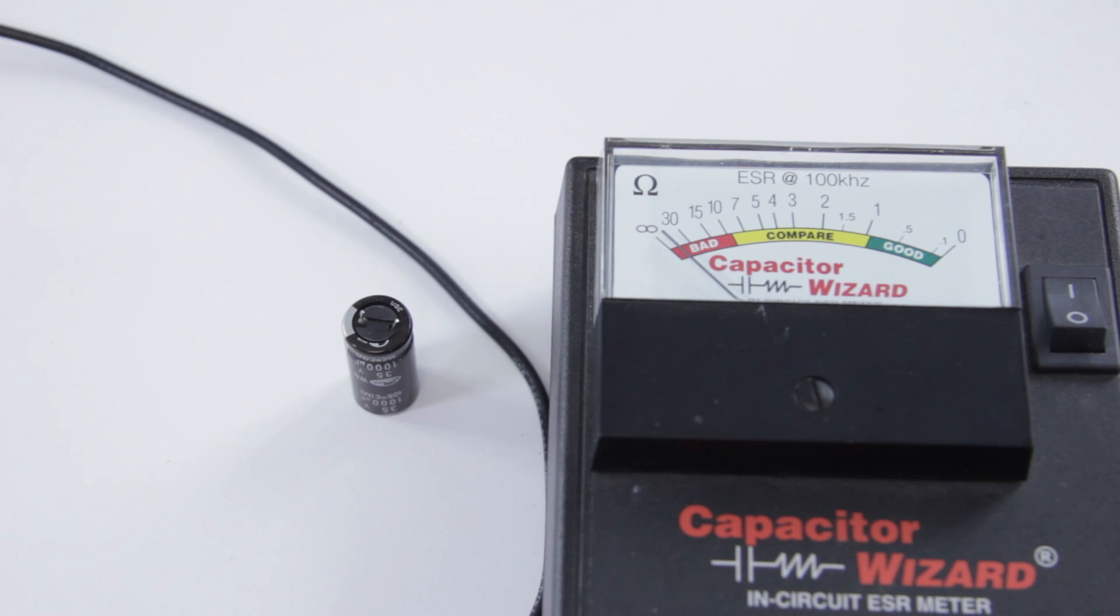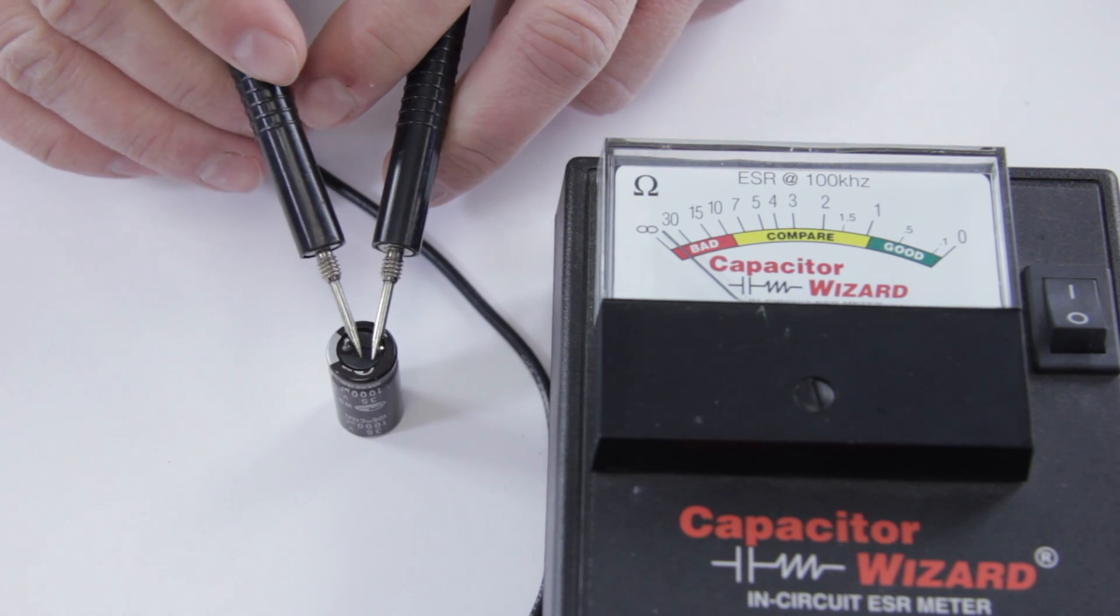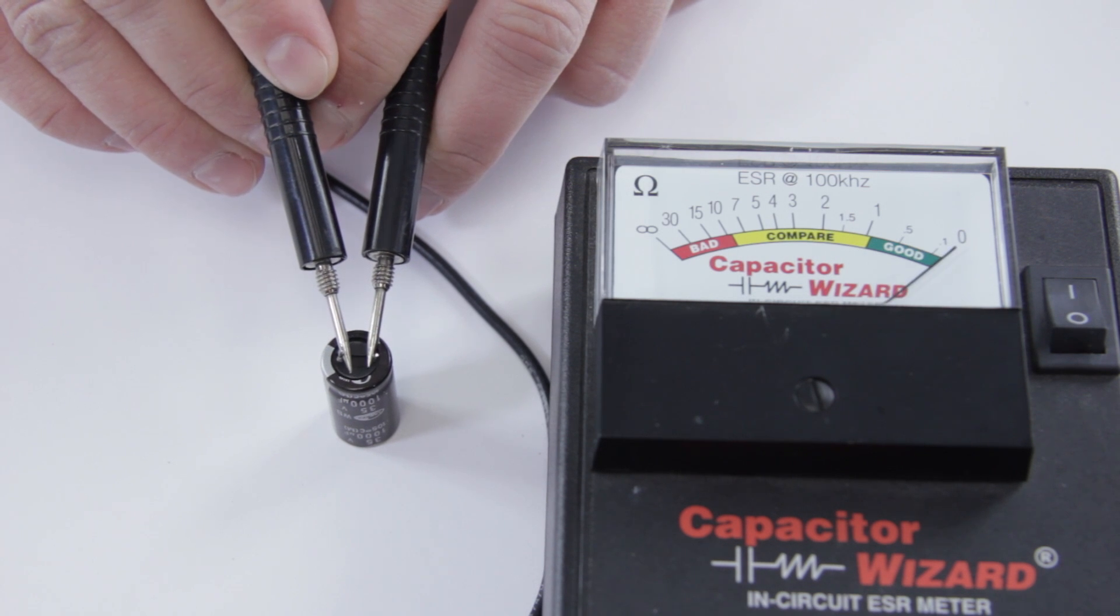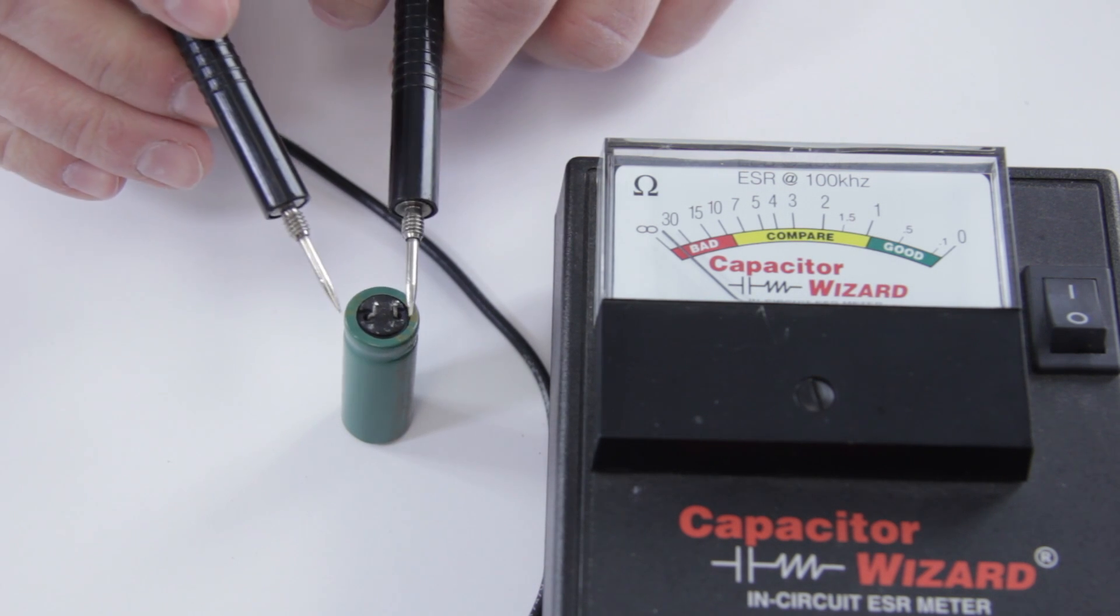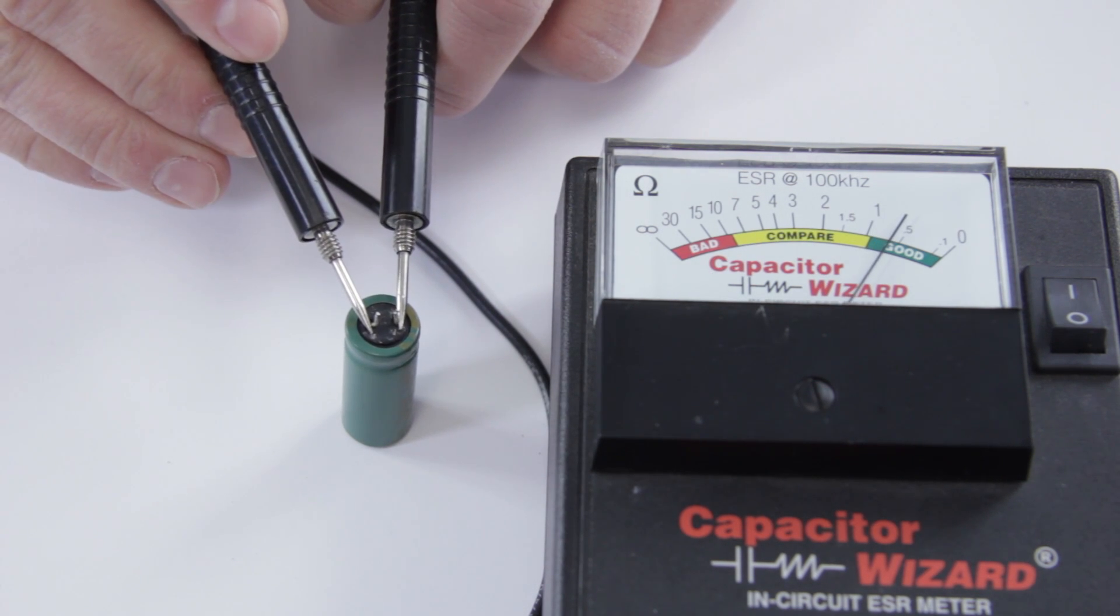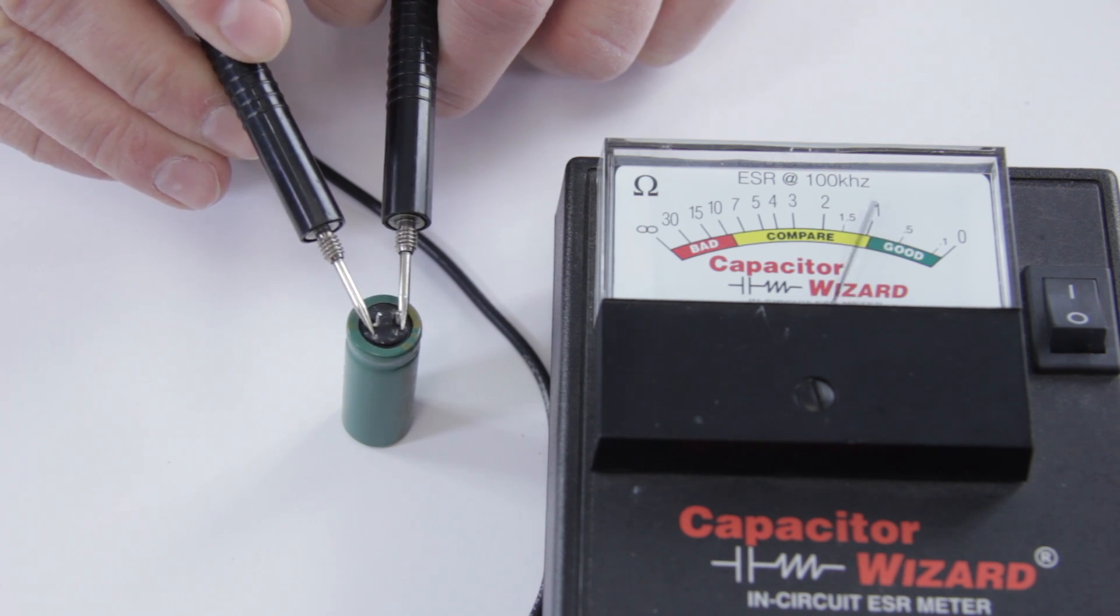Another way to check for bad caps is to use an ESR meter. This is used to check in circuit for bad caps and can pick up bad caps that are not visible to the naked eye. A good cap when you check it should ring and drop all the way down to zero ohms pretty much. Bad one on the other hand, this is our puffy one from earlier, shows only that it's just good and doesn't beep at us.